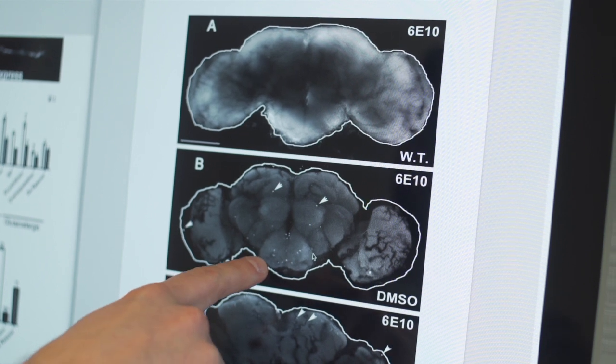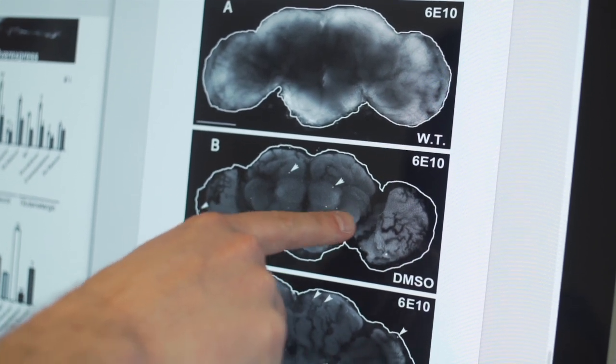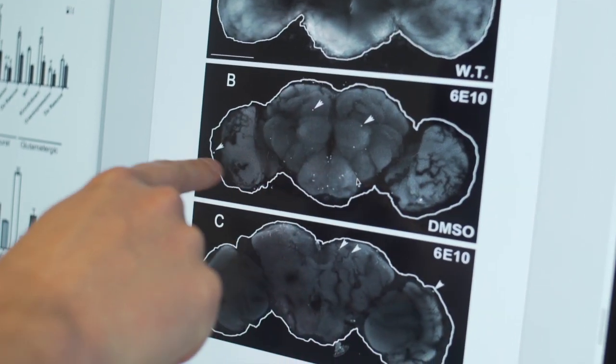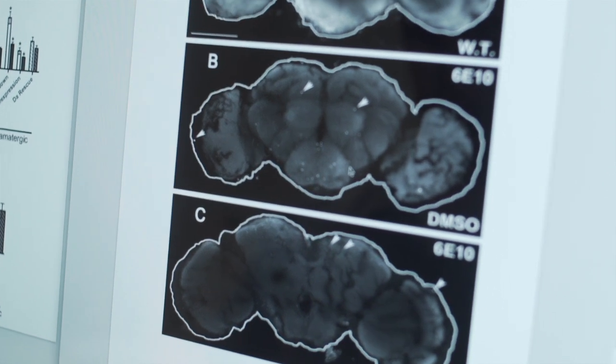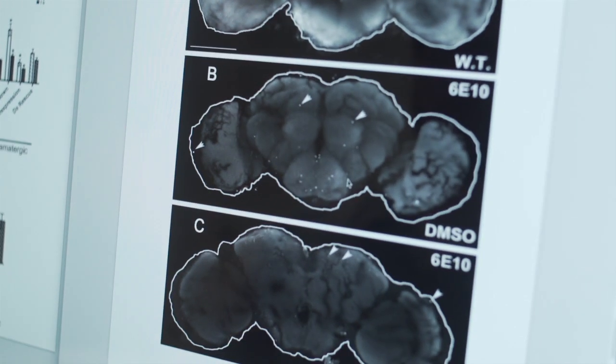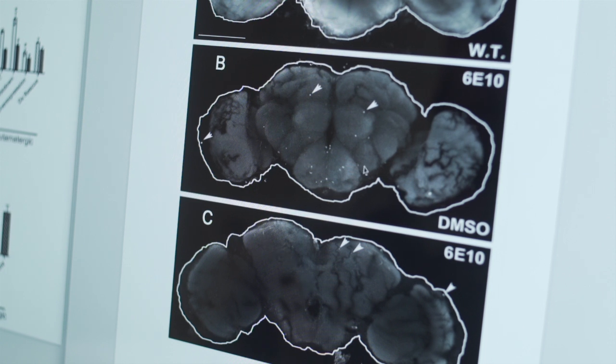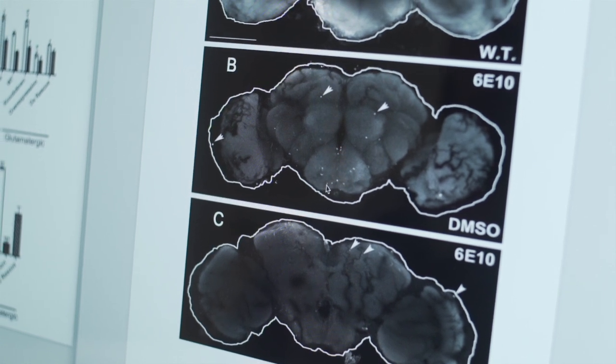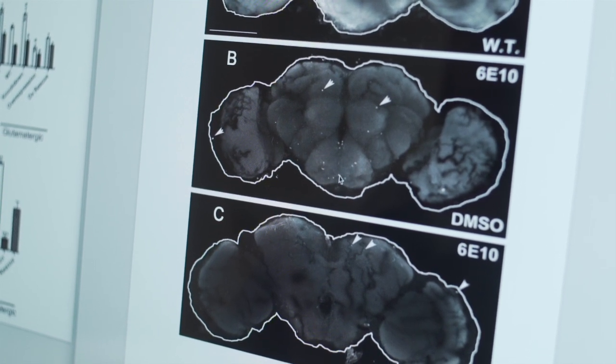You see all these little dots. Those are the same little protein aggregates that happen in human brains. And so we can then study the human disease in this tiny little animal and better understand it in humans.